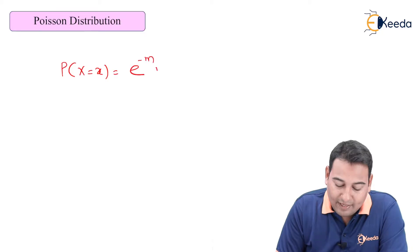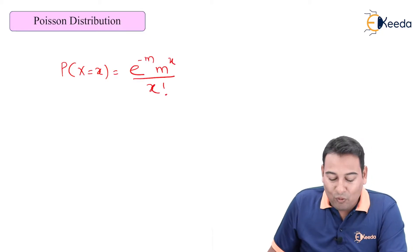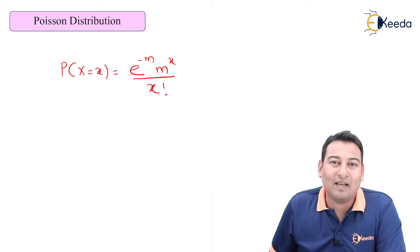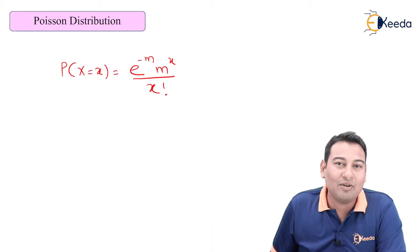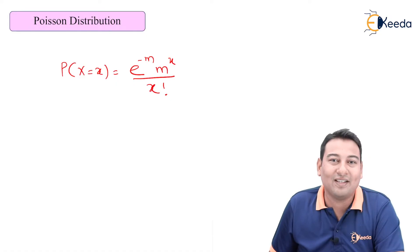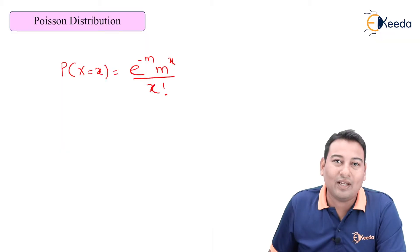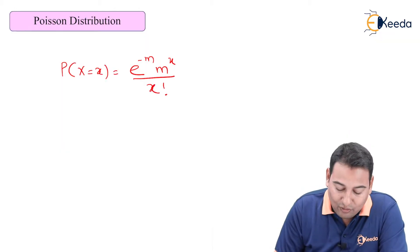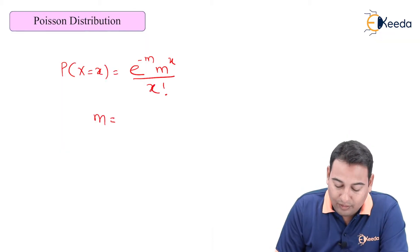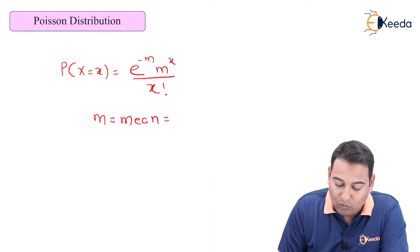e^(-m) * m^x / x!. Poisson distribution is quite simple as compared to binomial distribution. In case of binomial distribution, there were three things required for the formula: n, p, and q. In Poisson distribution, only one unknown is required - that is m, which is your mean.